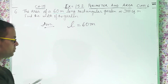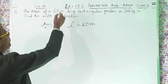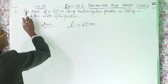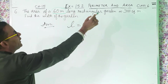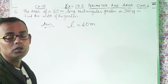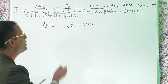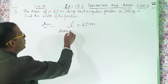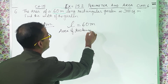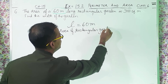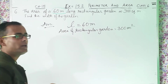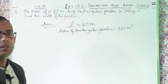If I omit the portion '60 meters' and read: 'The area of a long rectangular garden is 300 square meters.' That means the area is also given to us. Area of rectangular garden equals 300 meter square. So it is the same as the previous sum.